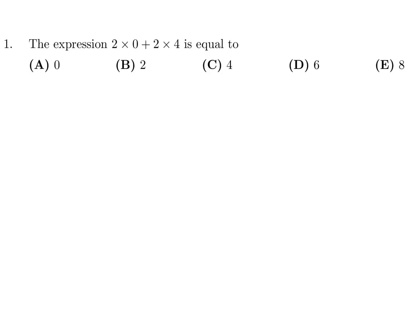The expression 2 times 0 plus 2 times 4 is equal to... 2 times 0 is 0, 2 times 4 is 8, and 0 plus 8 is 8. So the answer is E.